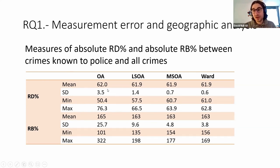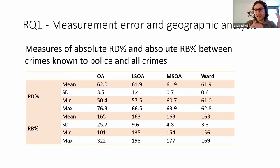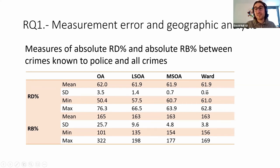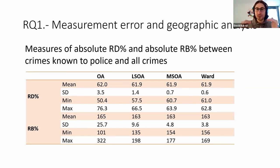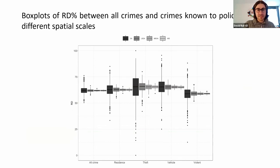What this means is that in some microplaces or output areas, the dark figure of crime — the difference between all crimes and those known to the police — will be very large, and in others very small. While at the ward level, this difference between areas becomes very small, so all neighborhoods or wards will have similar amounts of dark figure of crime.